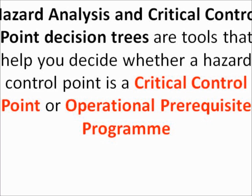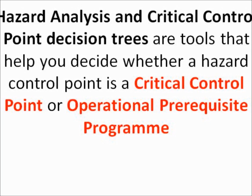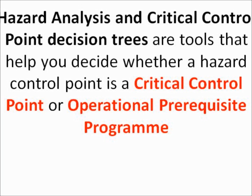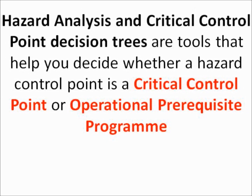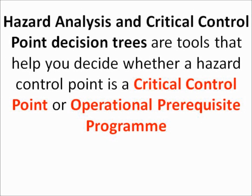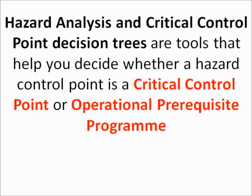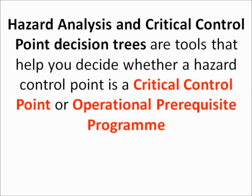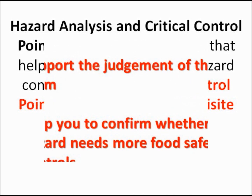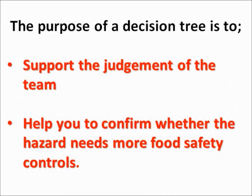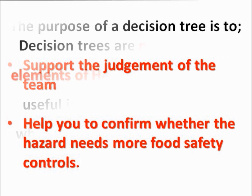Simply, Hazard Analysis and Critical Control Point Decision Trees are tools that help you decide whether a hazard control point is a Critical Control Point or Operational Prerequisite Program. The purpose of a decision tree is to support the judgment of the team and help you to confirm whether the hazard needs more food safety controls.